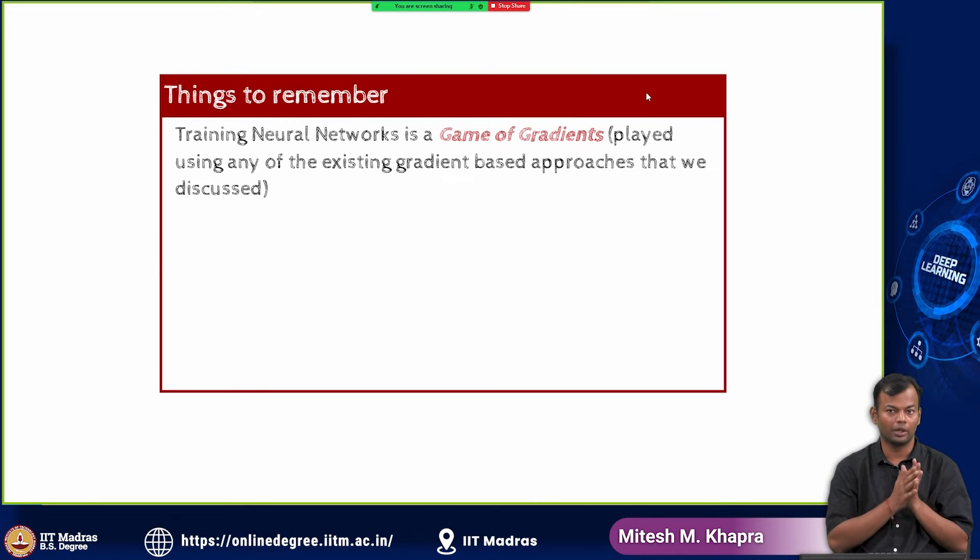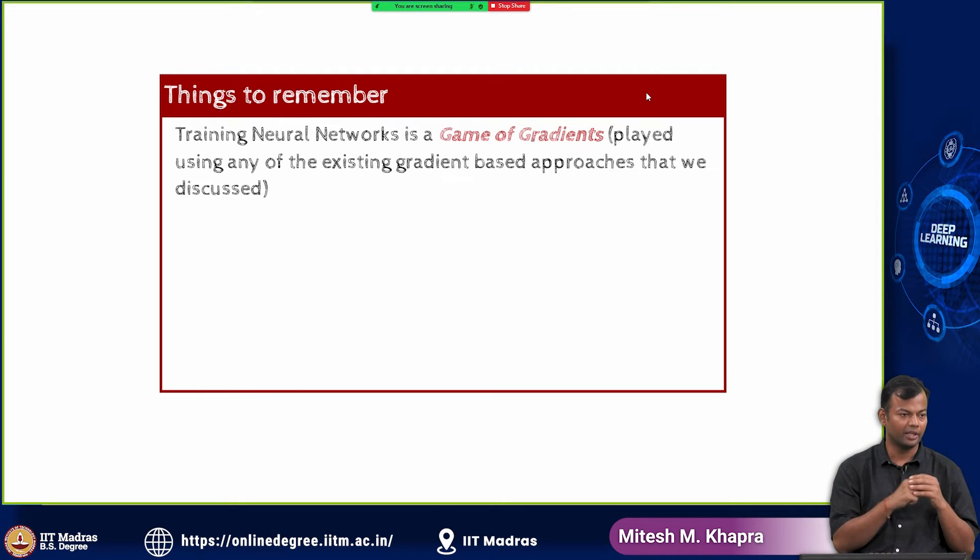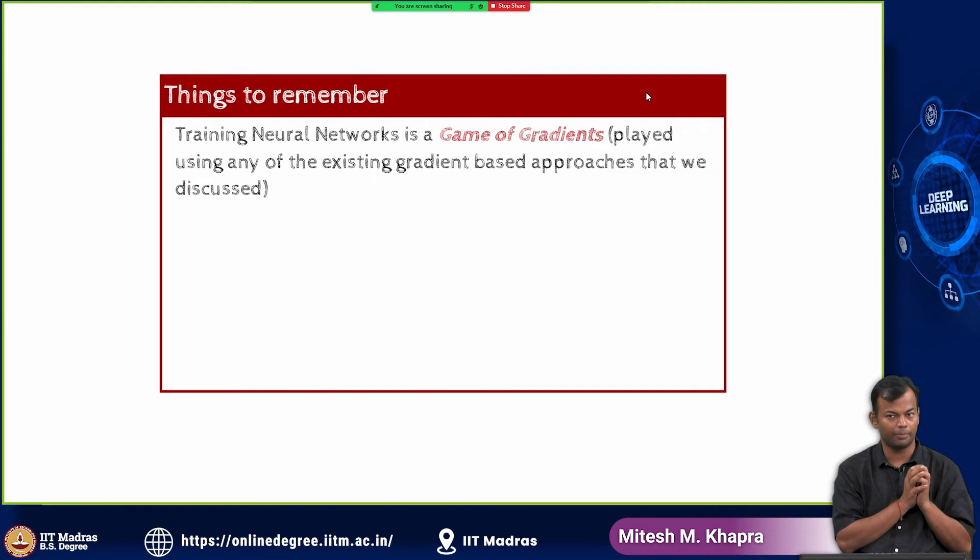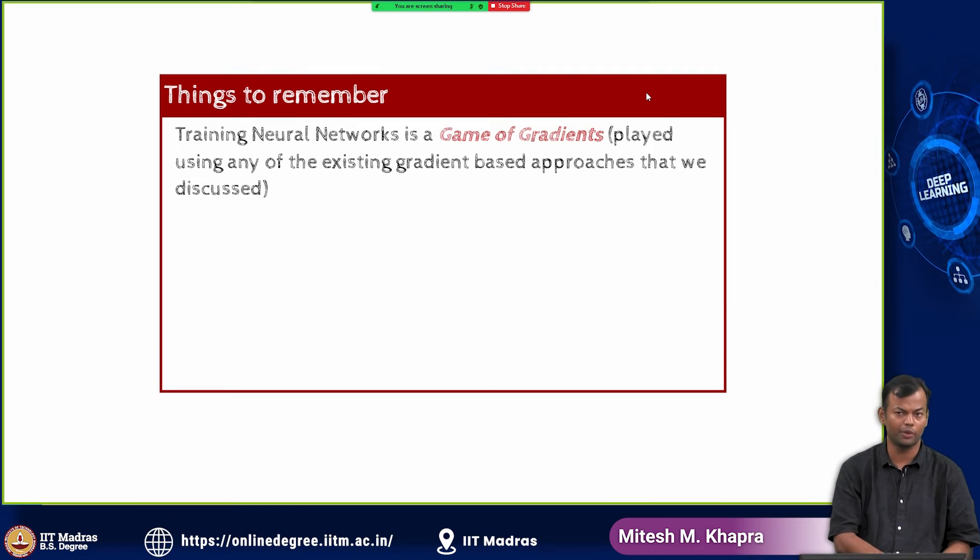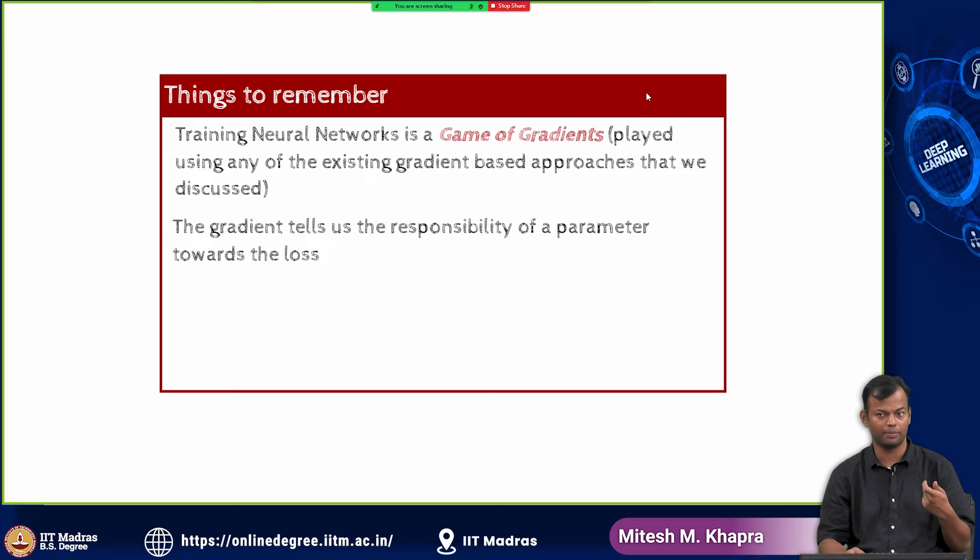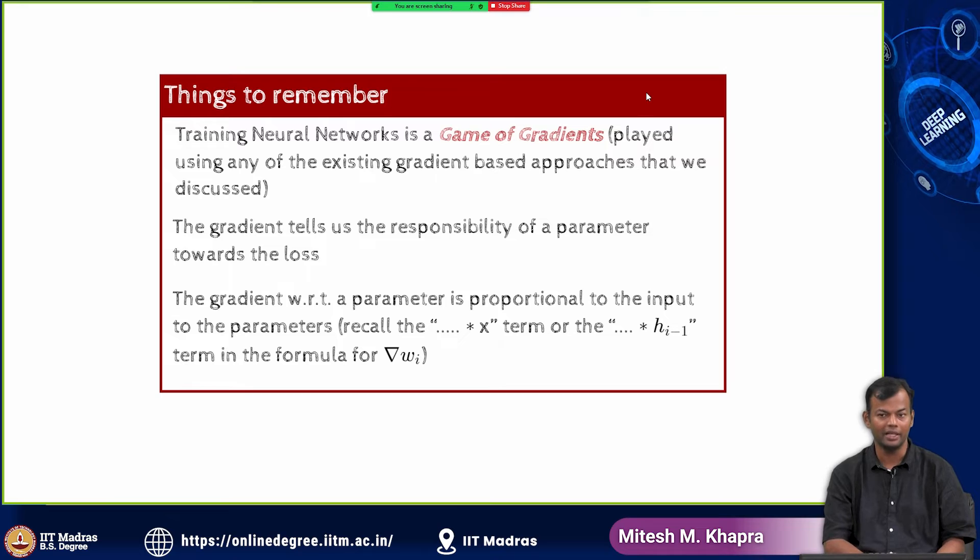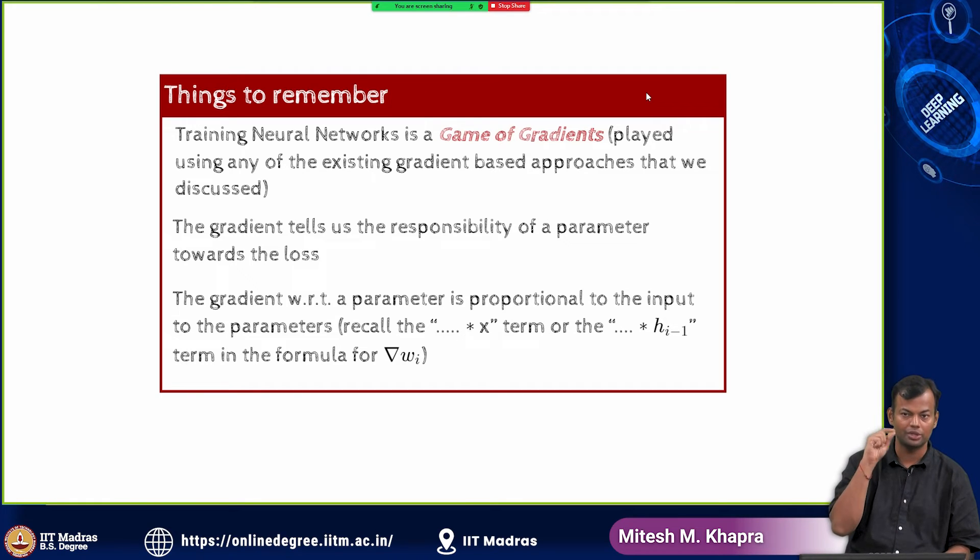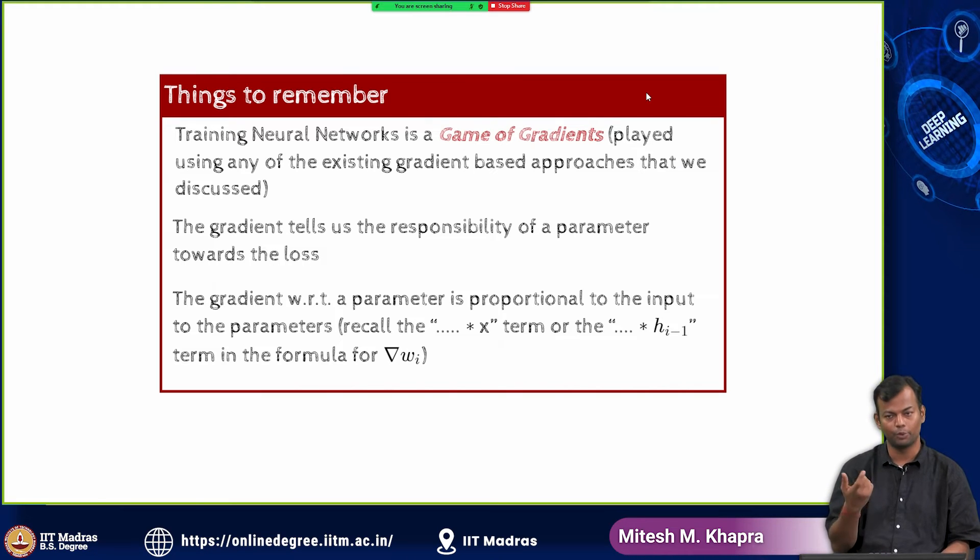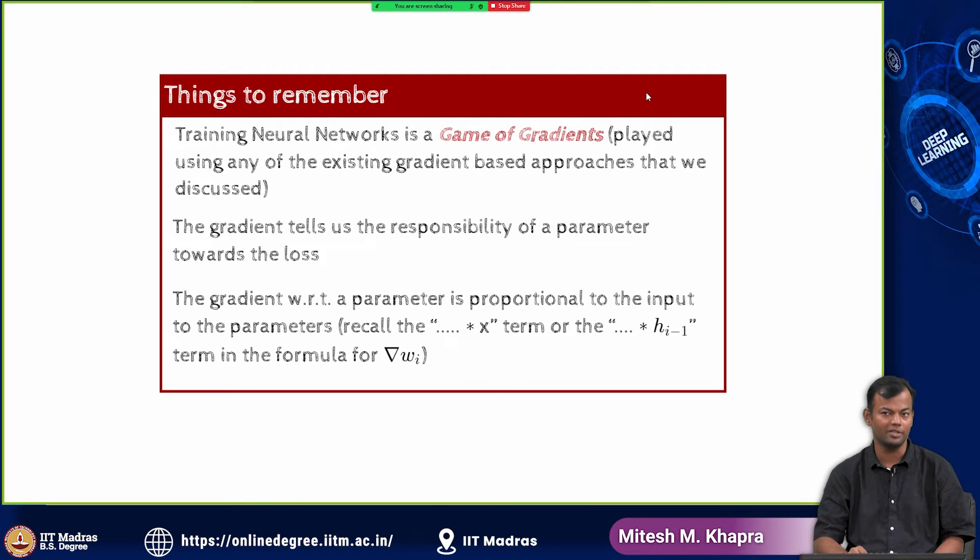Now the points to remember right now are that training neural networks is a game of gradients. You compute gradients at every layer and then you use whatever variant or your favorite variant of the gradient-based approach - it could be momentum, NAG, Adam, Adamax, whatever you want to use - but the derivatives will get used inside them. This gradient is the way of quantifying the responsibility of the parameter towards the loss. The higher the gradient, higher the responsibility; lower the gradient, lower the responsibility. The gradient with respect to a parameter is proportional to the input connected to that parameter. In the input-output network, this input was just x. In a multi-layered network, it is just the input from the previous layer, which is h_{i-1}. These are things to remember.